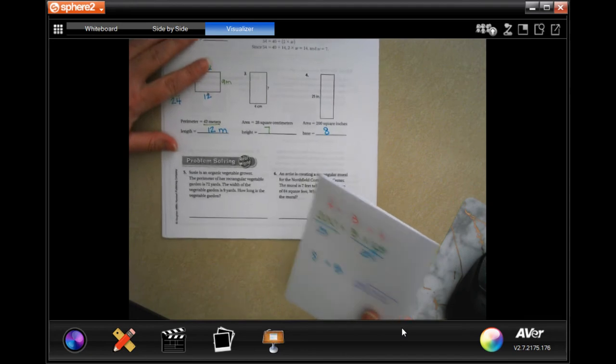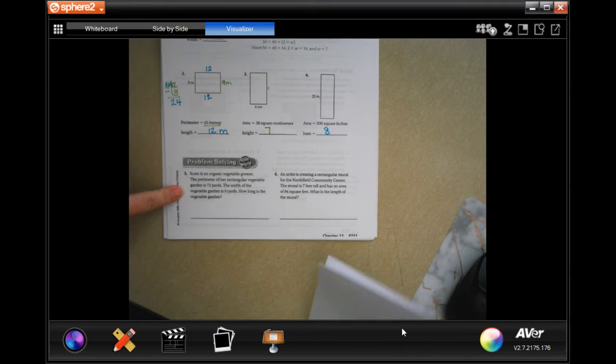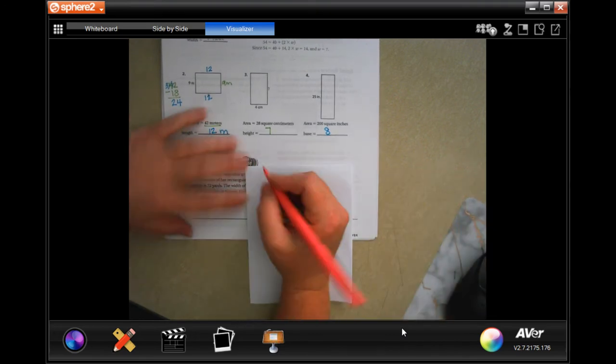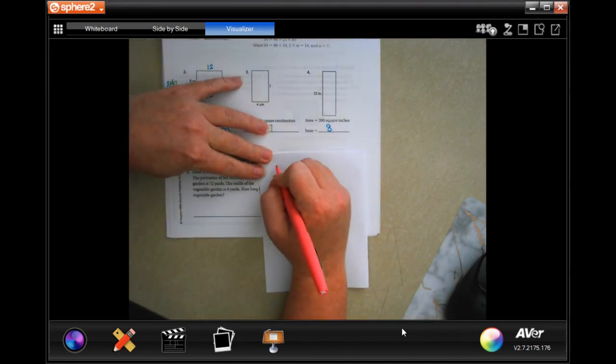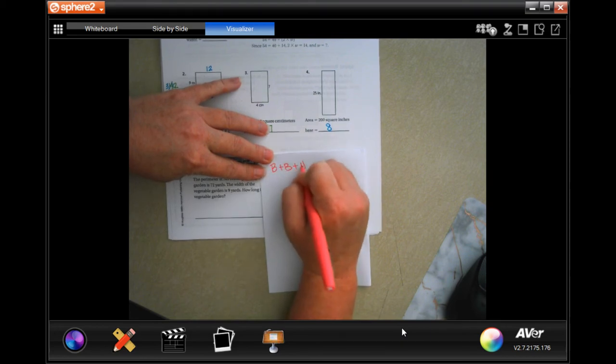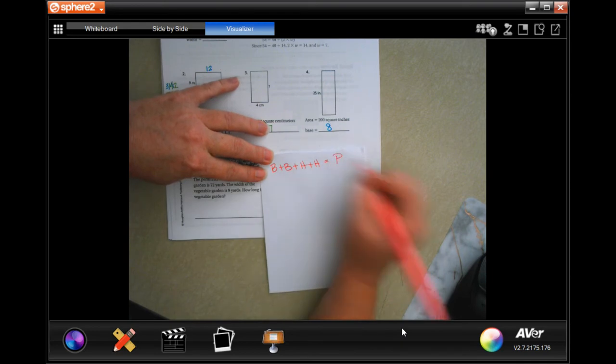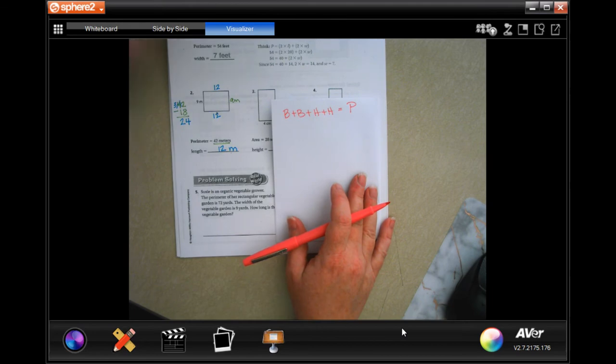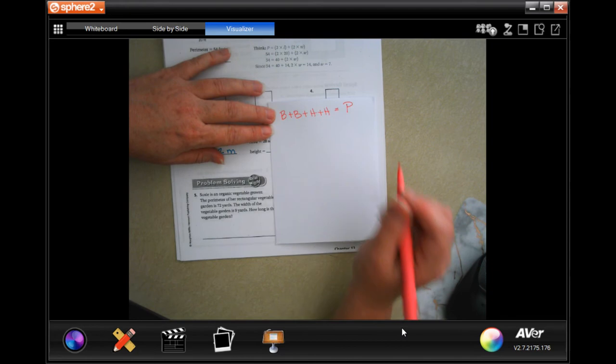So we're going to go down to number five. It says, Susie is an organic vegetable grower. The perimeter of her rectangle vegetable is 72 yards. Base plus base plus height plus height equals the perimeter. Essentially, that's kind of what it is. You can do the length times two and the width times two. That's fine, too.